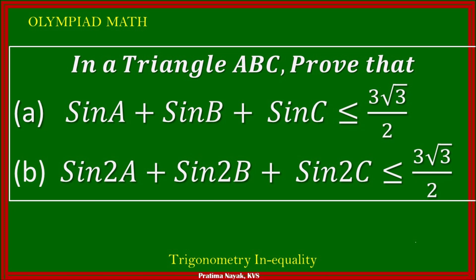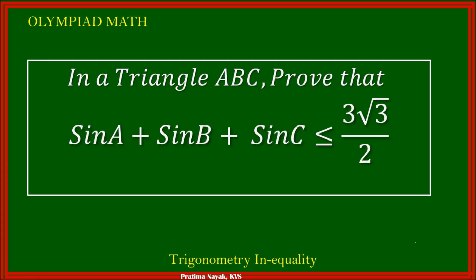In a triangle ABC, prove that sin A plus sin B plus sin C is less than or equal to 3 square root 3 over 2. We will prove this by Jensen's inequality.